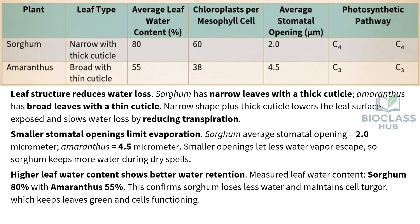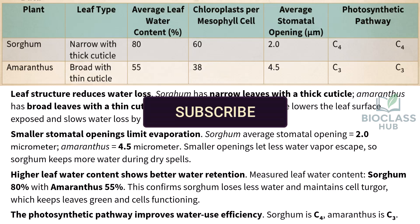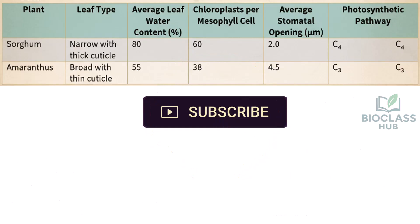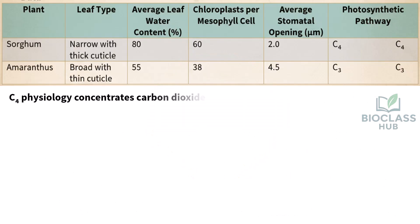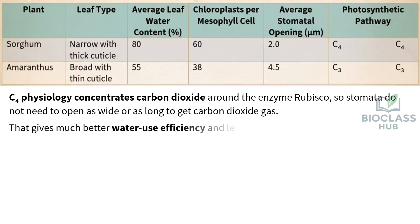The photosynthetic pathway improves water use efficiency: sorghum is C4, amaranthus is C3. C4 physiology concentrates carbon dioxide around the enzyme RuBisCO, so stomata do not need to open as wide or as long to get carbon dioxide. That gives much better water use efficiency and less photorespiration in hot, dry conditions.